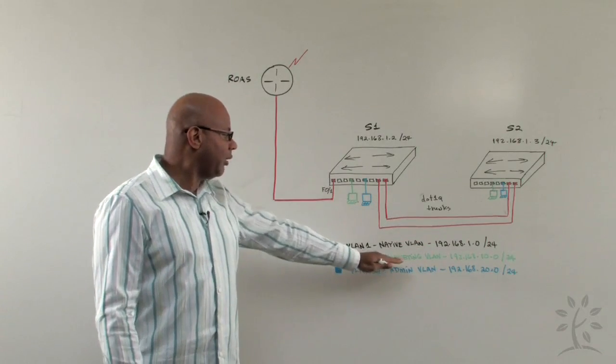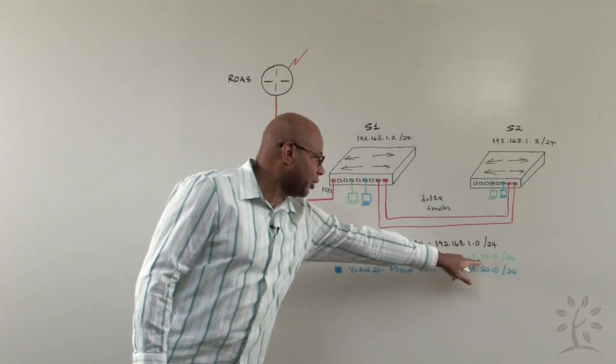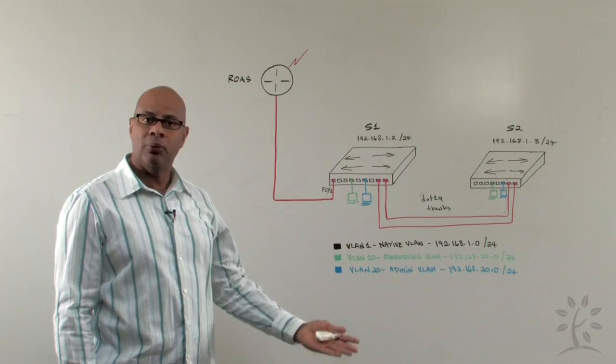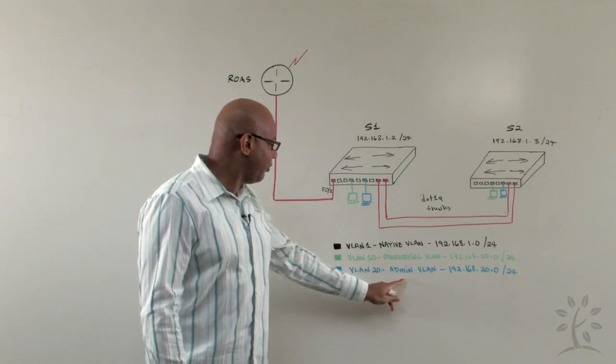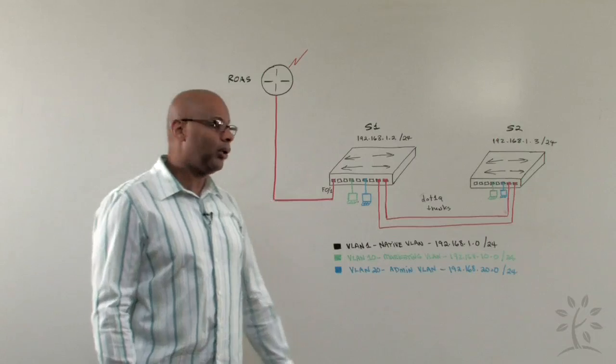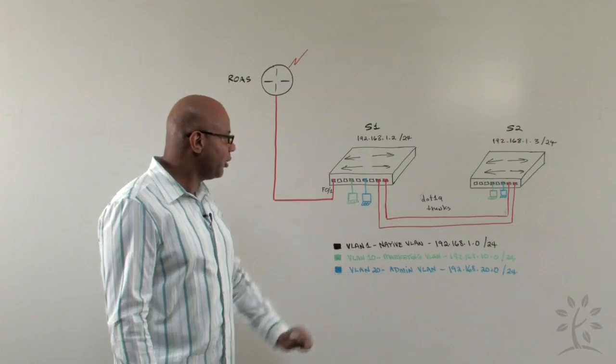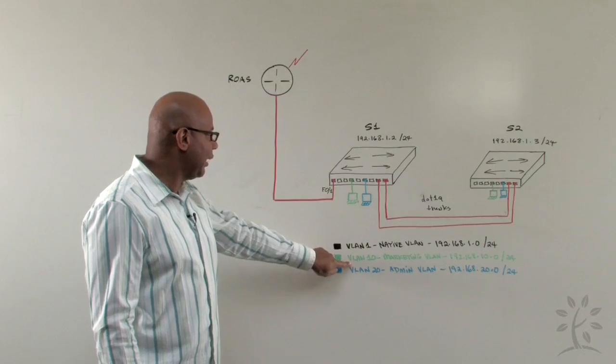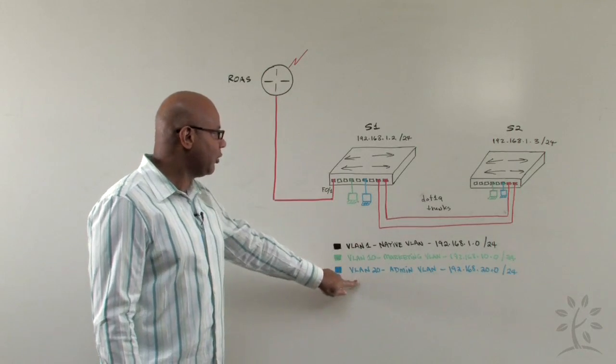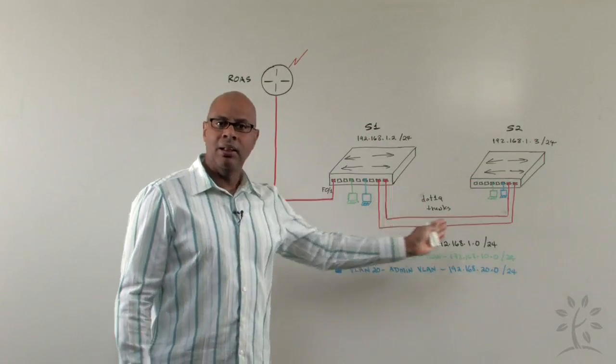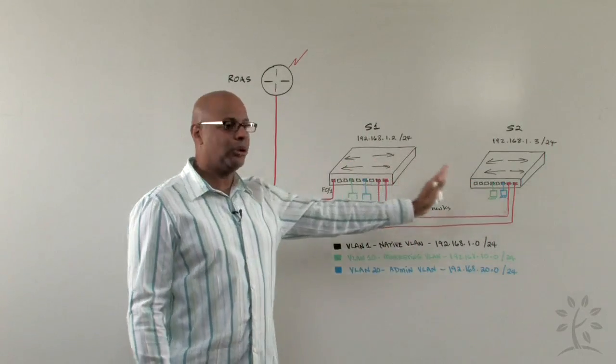VLAN10 is going to be our marketing VLAN with that address. Notice that we're changing that third octet to 10.0 to show that it's on a different network. And then we have VLAN20, the administration VLAN, which is on the 20.0 network. I'm using colors to show you that the green hosts belong to VLAN10 and the blue hosts belong to VLAN20 on both switches. The trunk is used to extend communication from switch 1 to switch 2.